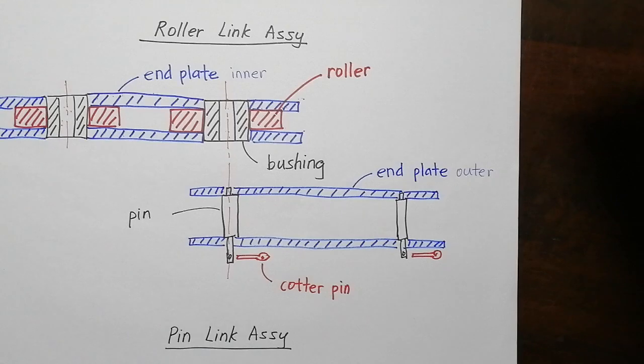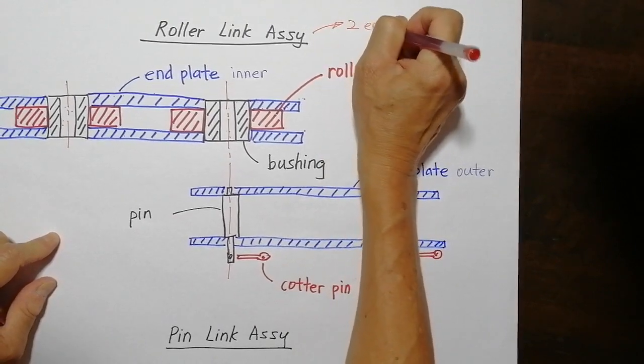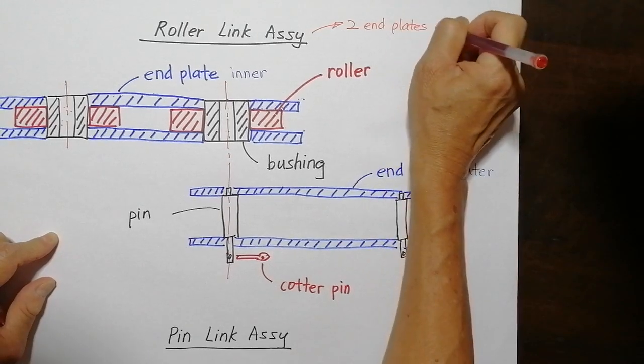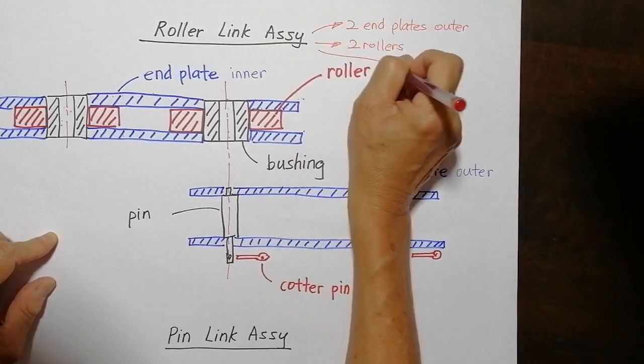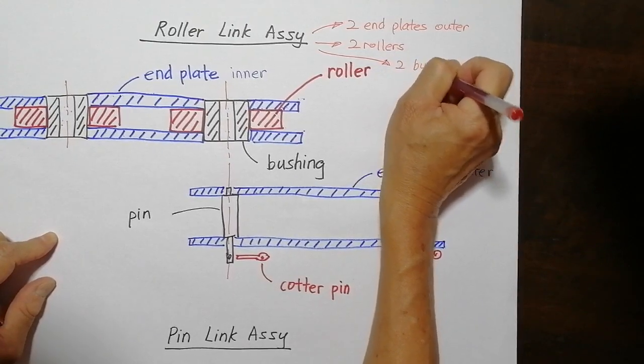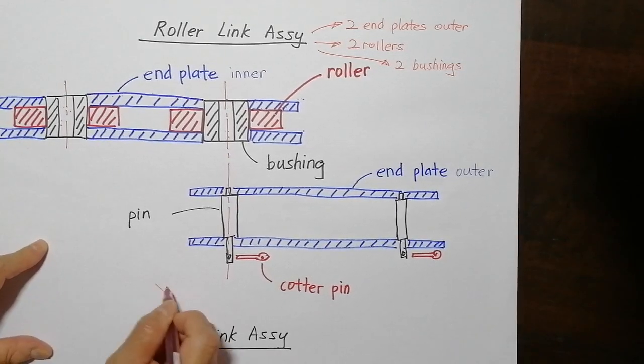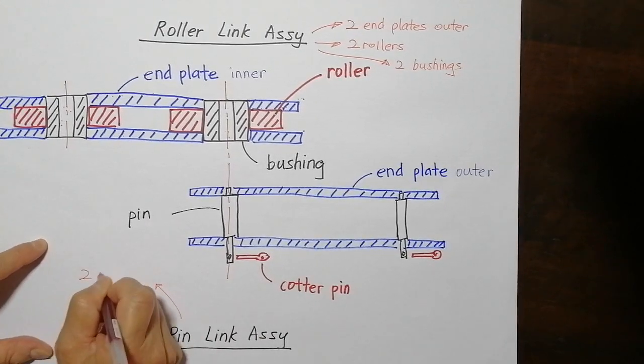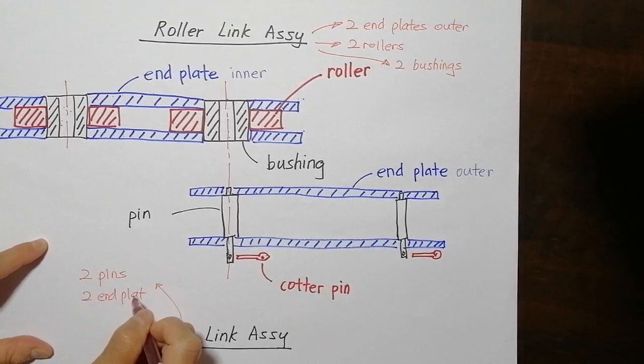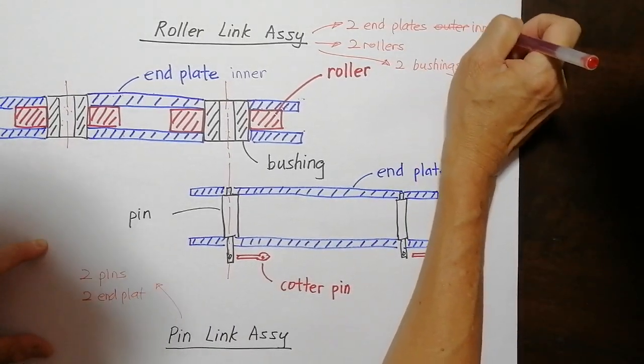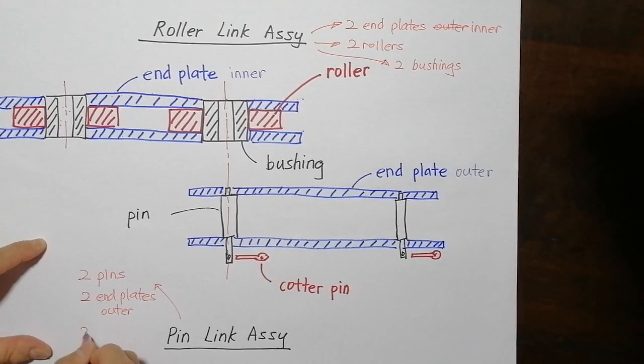Now, to put all the parts in place, let's reiterate the thing. For the roller link assembly, you should have two end plates outer, and two bushings. So these are the composite members for that. And for the pin link assembly, you will have two pins. Again, two end plates. Oh, sorry, this is two end plates inner. And this is two end plates outer. And this will have two cotter pins.